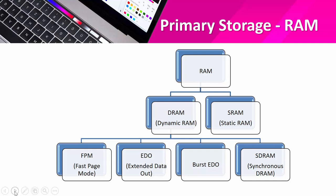Dynamic RAM can also be divided into four types: FPM (Fast Page Mode RAM), EDO (Extended Data Out RAM), Burst EDO (Burst Extended Data Out RAM), and SDRAM (Synchronous Dynamic RAM).